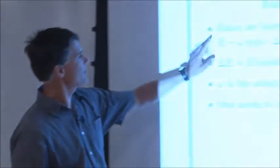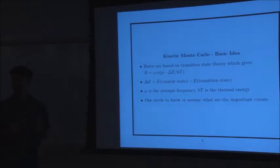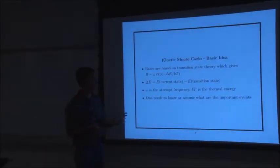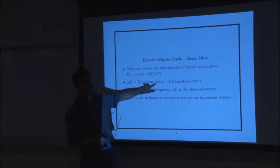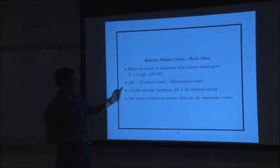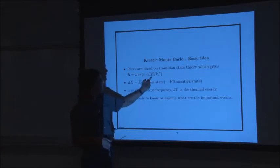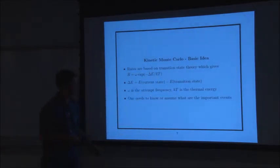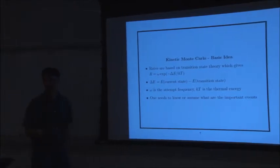The basic idea behind kinetic Monte Carlo is that you model the system as a big Markov chain — you have certain events and you assign a rate to them. Your system has an energy, however you want to define it. If you want to move an atom, you compute its energy in the current state, define a transition state, and the change in energy gives you an energy barrier. The rate is proportional to exp(−barrier/kT). As temperature goes up, the effect of the barrier goes down and events become easier to happen. Of course, you have to know or assume what the important rates are.